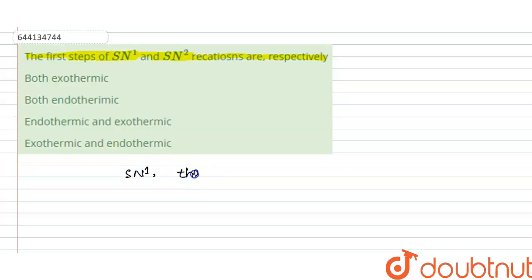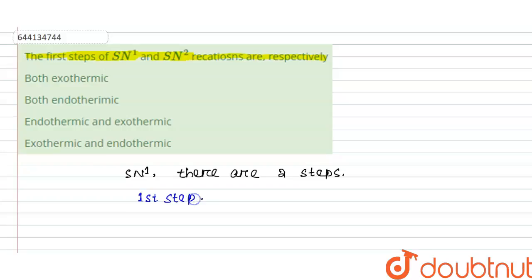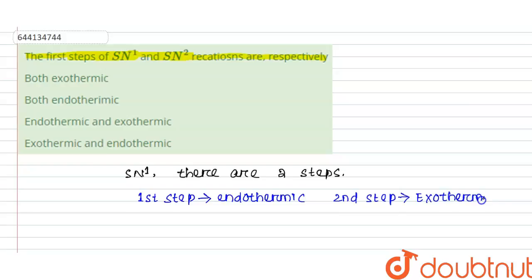In SN1, there are two steps. The first step is endothermic and the second step is exothermic. So in SN1: first step is endothermic, second step is exothermic.